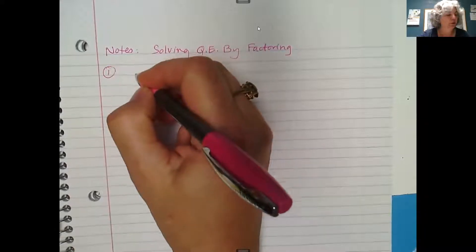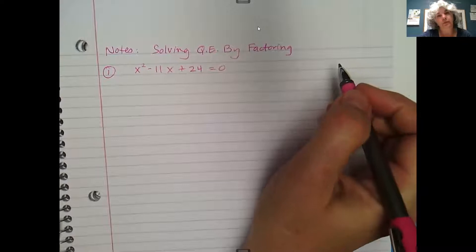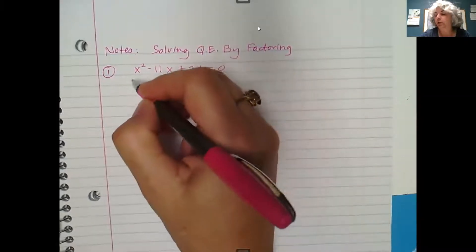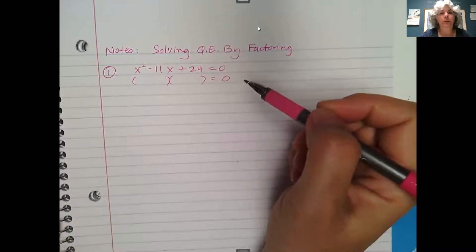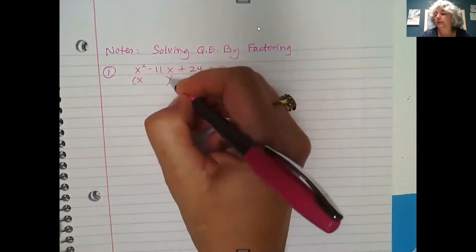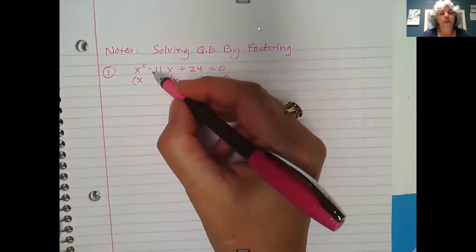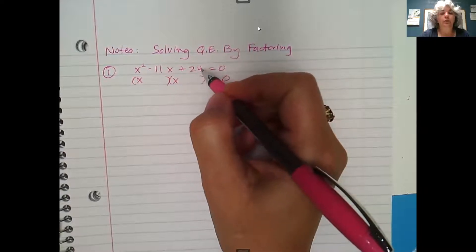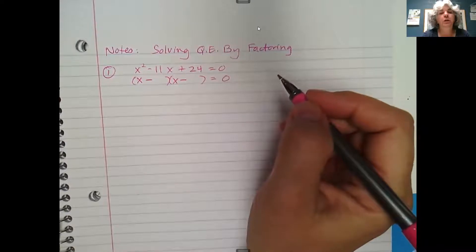Question one: x squared minus 11x plus 24 equals zero. This one is already set equal to zero for us, so we're going to factor the quadratic. This is a trinomial, so we try to factor it with double parentheses to get two binomials. x squared factors as x and x. We want to think of two numbers that multiply to give us 24 but add to give us negative 11. The only way to get a negative 11 by adding, while still multiplying to a positive number, is if both numbers are negative.